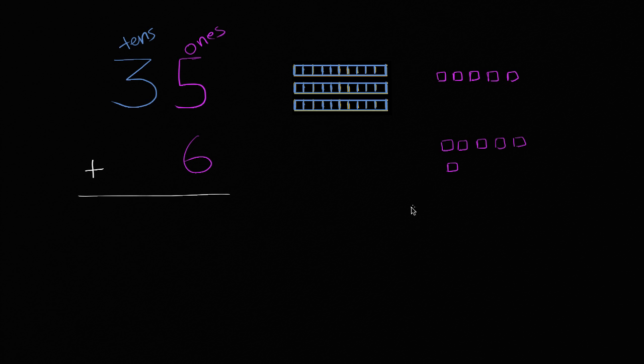So let's think about it now. So I'm going to start with the ones. So I have five ones, and I want to add six ones. So what's that going to be? What's that going to be altogether? Well, five ones plus six ones, that's going to be 11 ones.